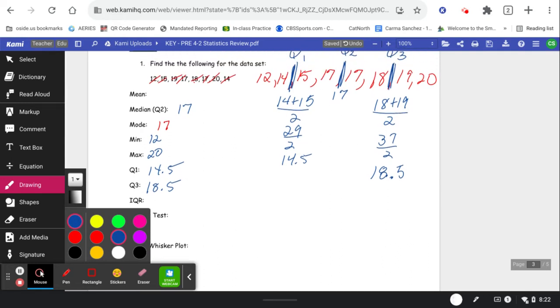My mean is where I'm going to add these all up and divide by eight. So for example, 12, I'm doing this on my calculator, plus 14 plus 15 plus 17 plus 17 plus 18 plus 19 plus 20. So when I added all of these up and I divide by eight, I get 132 divided by eight because there's eight pieces of data and that gives me 16.5. That is my mean.